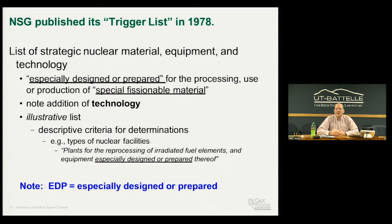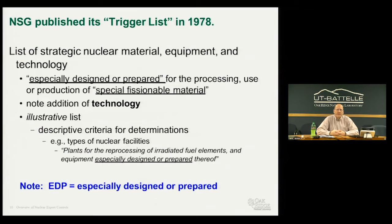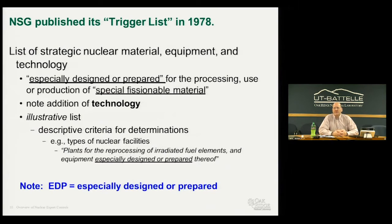The NSG published its first Trigger List in 1978—similar to the Zanger Committee's list but somewhat different, adding technology where the NPT did not mention it. It is an illustrative list, using descriptive criteria for determining whether something is controlled. For example, it controls plants for the reprocessing of irradiated fuel elements, or equipment especially designed or prepared thereof, regardless of the plant's size or technology. The key term throughout the entire Trigger List is EDP—especially designed or prepared for a nuclear end use, whether civilian or military.